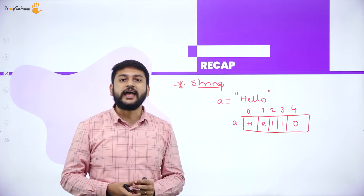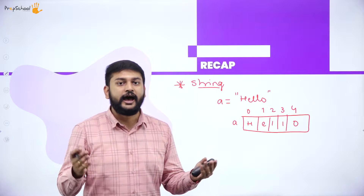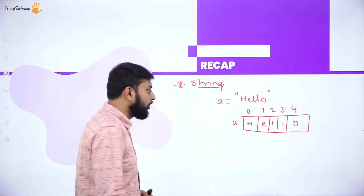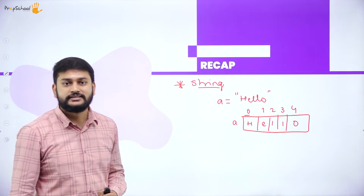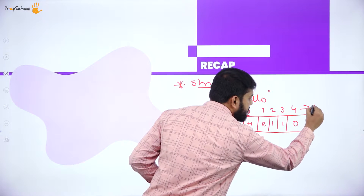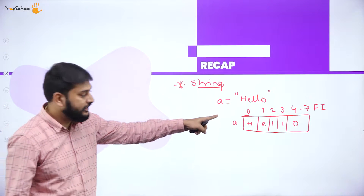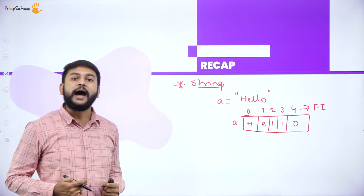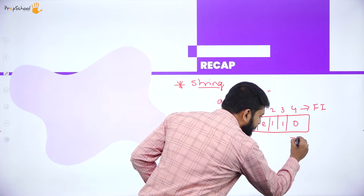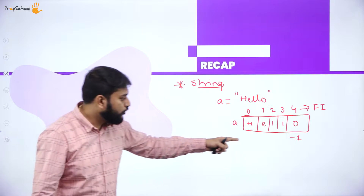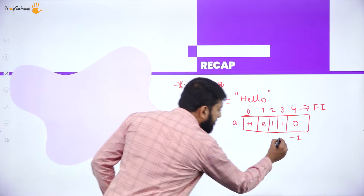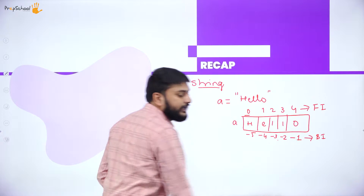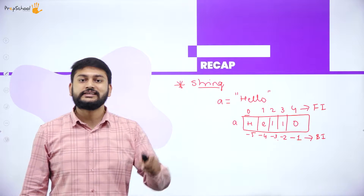We have two different types of indexing: forward indexing and backward indexing. In forward indexing, I always start with zero. For backward indexing, I always start from the last element of the string, beginning at minus one: minus one, minus two, minus three, minus four, minus five.